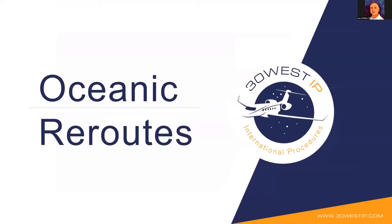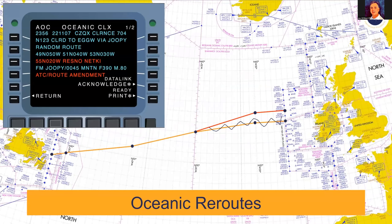Thank you to everybody who's with us today. This is one of the webcasts we developed in response to comments from users during our last webcast — this topic was brought up and we're responding to it. Oceanic reroutes: while an oceanic reroute can occur anywhere, the most likely application is the North Atlantic, because the North Atlantic currently does airborne clearances prior to entering their airspace. These can be done via voice — VHF, HF — or ACARS.